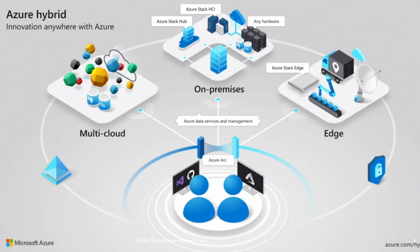Azure Arc is a software solution that enables you to project your on-premise and multi-cloud resources — such as virtual or physical servers, Kubernetes clusters, or databases — into Azure Resource Manager via ARM. With Azure Arc's hybrid and multi-cloud solution, you manage your resources as if they are running in Azure using a single pane of glass. Azure Arc offers simplified management, faster app development, and consistent Azure services. It also helps you organize, govern, and secure Windows, Linux, SQL Server, or Kubernetes clusters across data centers, the edge, and multi-cloud environments. You can design and build cloud-native apps anywhere without sacrificing central visibility or control.